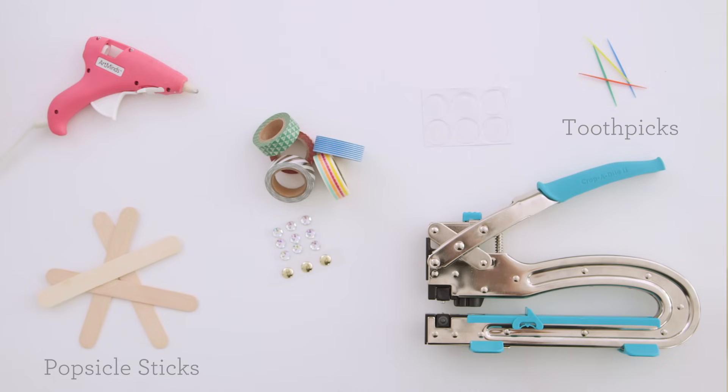Here's what you'll need to get started. Popsicle sticks, toothpicks, bubble cap stickers, a crop-a-dile, a hot glue gun, and embellishments are optional.